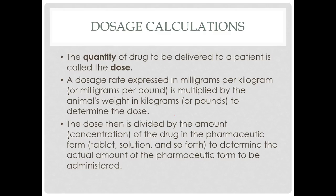The quantity of the drug to be delivered to a patient is called the dose. So one time that amount is a dose. The dosage rate is expressed in milligrams per kilogram, milligrams per kilogram or milligrams per pound, and is multiplied by the animal's weight in kilograms or pounds to determine the dose.